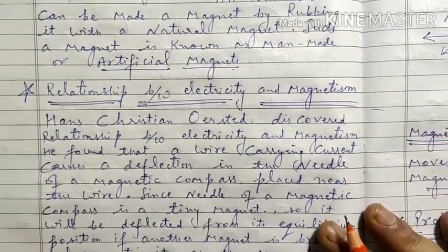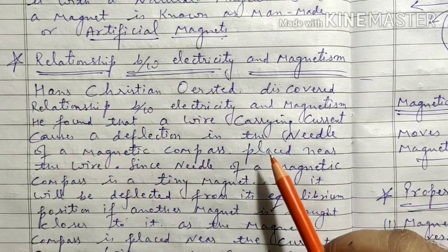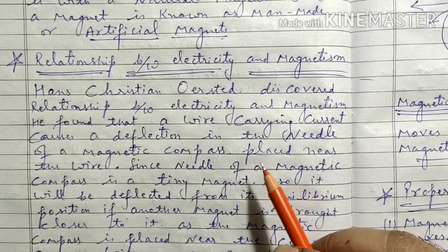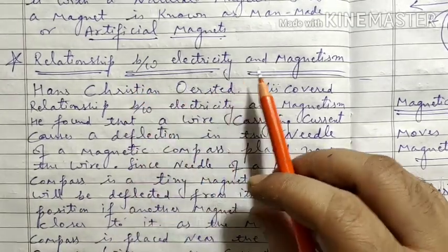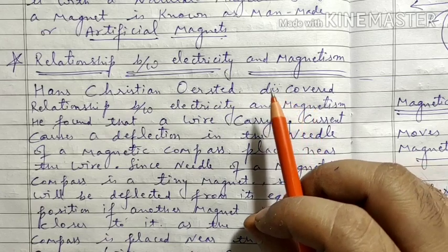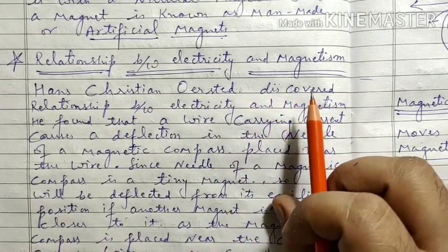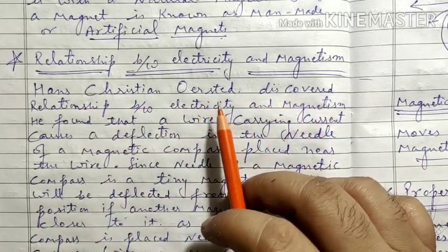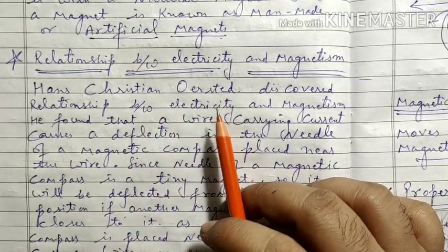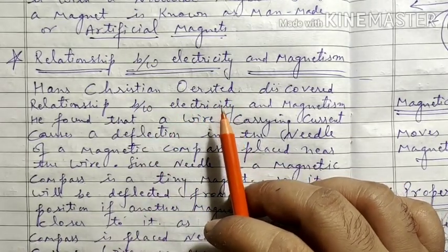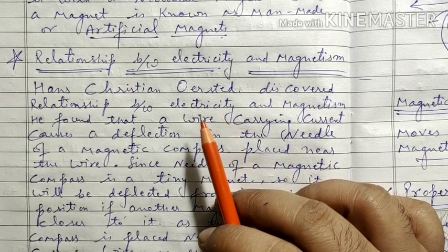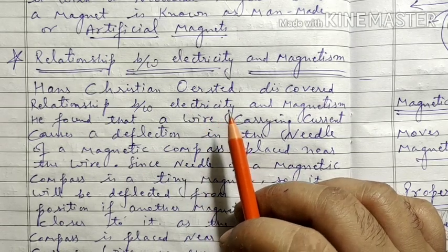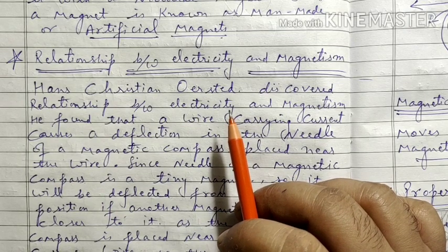Let's start now from the 10th standard. The first topic in your book is the Relationship between Electricity and Magnetism. The first topic covers Hans Christian Oersted. He was a physicist who made an accidental discovery. He had a small experiment in his lab with a current carrying wire and a magnetic compass.